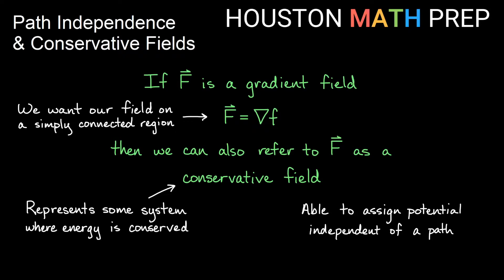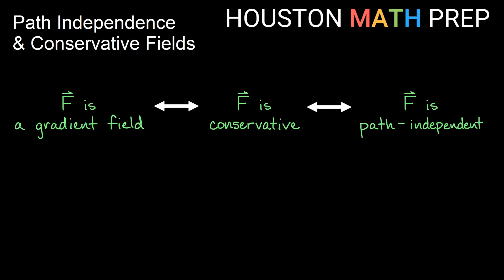If something is a conservative field, we're actually able to assign potential independent of the path we take from one point to another. So whether we move along a line, a parabola, or some squiggly line, it won't matter for the line integral in a conservative field. These three statements are all equivalent: gradient field, conservative field, and path independent.